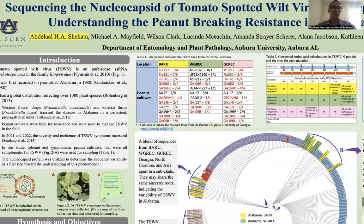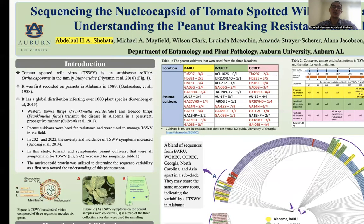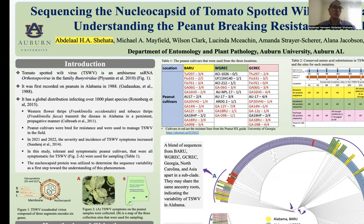This research is entitled 'Sequencing the Nucleocapsid of Tomato Spotted Wilt Virus as a Step Towards Understanding the Peanut Resistance Breaking in Alabama.' Peanut is a major crop in the US, especially in three southern states — Georgia, Alabama, and Florida — where they produce two-thirds of the total production in the whole country. Tomato Spotted Wilt Virus was first discovered on tomato, which is why it took that name, but today we're talking about the virus on peanut.